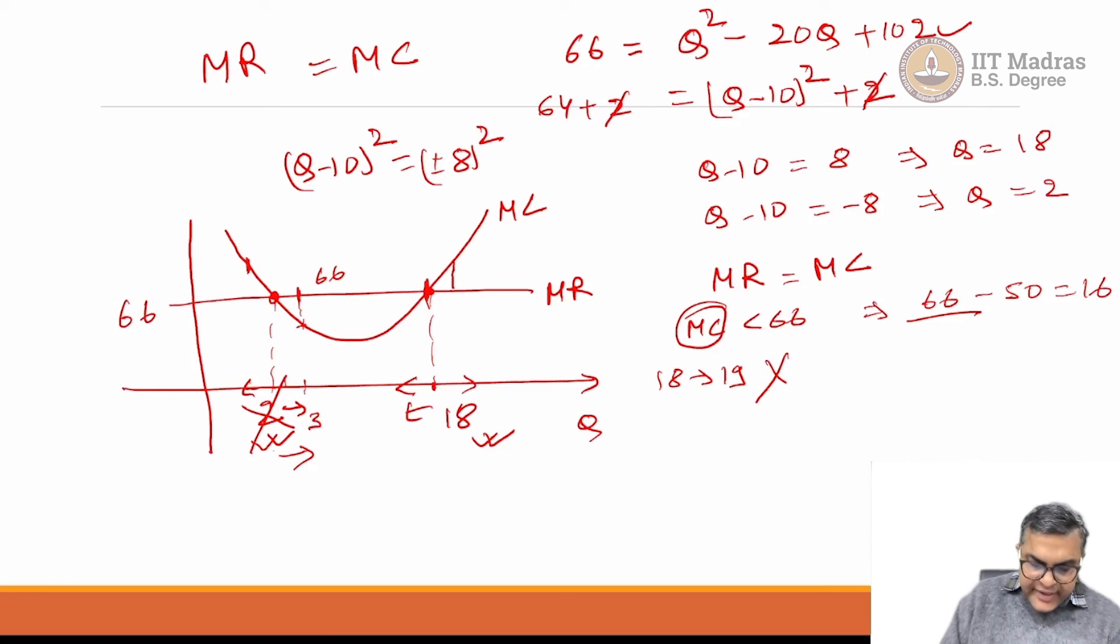How about 18 to 17? If you move from 18 to 17, of course your MR is greater than MC, but then you are losing this opportunity to earn profit. Therefore, you should not decrease from 18 to 17, and 18 is the optimal number. This is the way we do profit maximization.